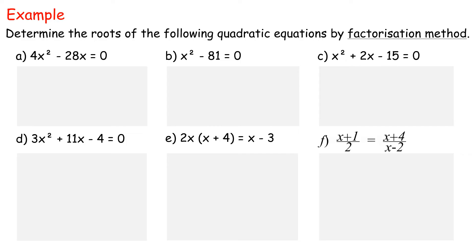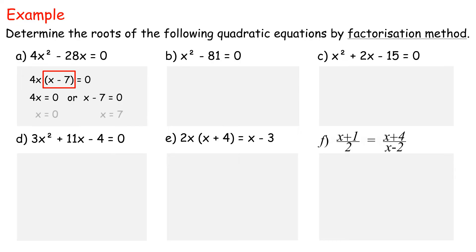Solution a: 4x² minus 28x equals 0. This is an example of factoring with greatest common factor. First, find the largest value which can be factored from each term on the left side. In this case, the largest value is 4x. Thus, 4x times (x minus 7) equals 0. 4x equals 0 or x minus 7 equals 0. x equals 0 or x equals 7. Therefore, the roots are 0 and 7.